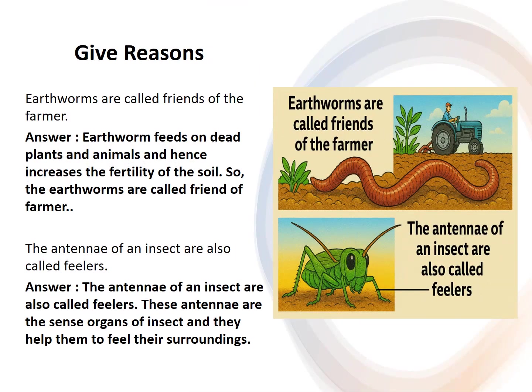Earthworms are called friends of the farmer because they feed on dead plants and animals, increasing the fertility of the soil. The antennae of an insect are called feelers because they are sense organs that help insects feel their surroundings.